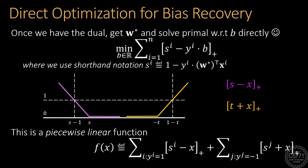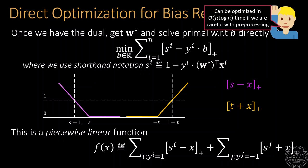It turns out that functions that are the sum of several such terms are piecewise linear functions. It would help to express this function as a sum of two summations, a summation over positively labeled points and a summation over negatively labeled points. Such functions can be optimized fairly quickly if we are careful.